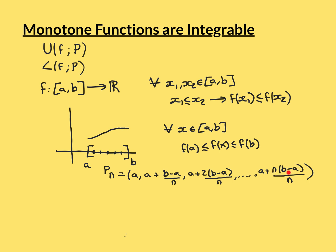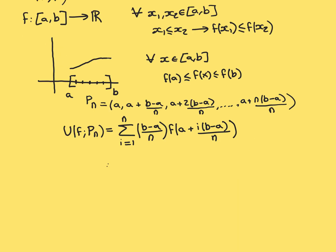Of course, the N's cancel, and then the minus a cancels with the a, and that will be your point b. So this is the partition fragmenting the interval into N equal pieces. It's a general partition — you substitute in whichever N you're considering. The formula works for all of them.